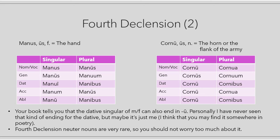A couple of observations. Your book tells you that the dative singular of the masculine and the feminine can also end in long 'u', but personally I have never seen that kind of ending — maybe you find it sometimes in poetry, but it's very rare. Second observation: you should not worry too much about the neuter nouns of the fourth declension, because they are very rare.